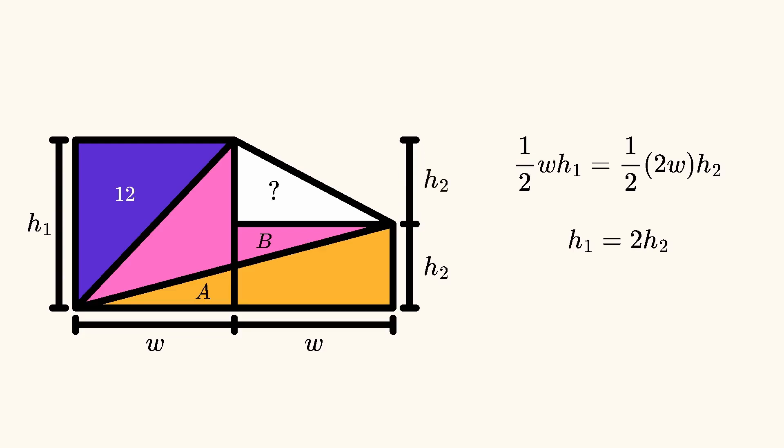This means the height of the left rectangle is twice the height of the right rectangle, so let's call them 2H and H.